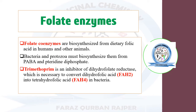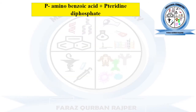Trimethoprim is one of the drugs that acts as an inhibitor for the dihydrofolate reductase. These folate coenzymes are involved in the pathway for the formation of dihydrofolate and tetrahydrofolate, which ultimately results in the formation of folic acid required for the synthesis of nitrogenous bases, DNA and RNA. Once these folate coenzymes are inhibited, the entire pathway will be disturbed. The drug that inhibits dihydrofolate reductase is trimethoprim, and these folate coenzymes are generally synthesized inside bacteria and protozoa.